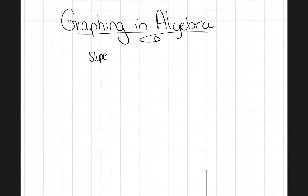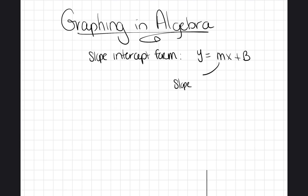I'm sure everyone has heard of slope-intercept form — write on your piece of paper: slope-intercept form. That is y equals mx plus b. M stands for the slope and b represents the y-intercept. The y-intercept just means if I have a line, where does my line cross over the y-axis?